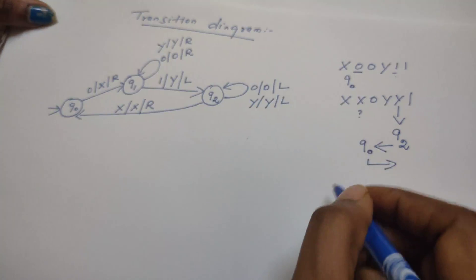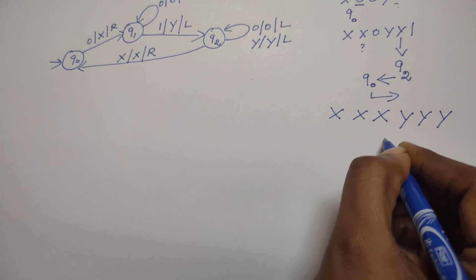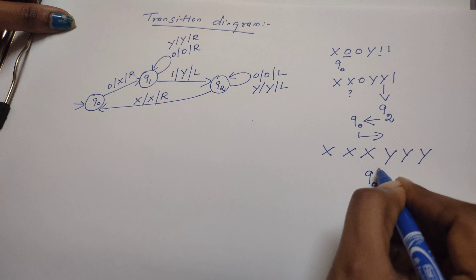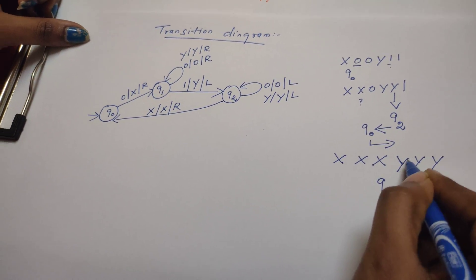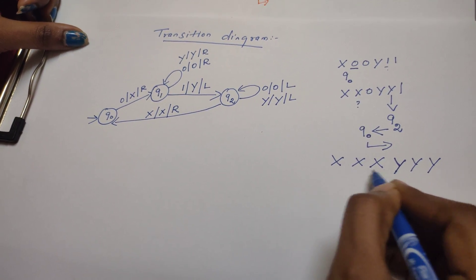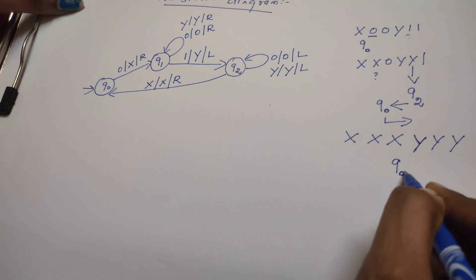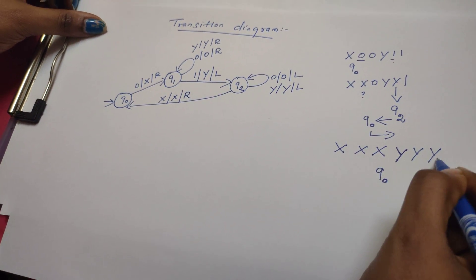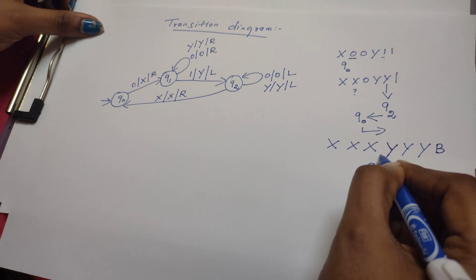At one point, all zeros are replaced by x and all ones are replaced by y. When the Turing machine is in state q0, it expects a zero, but only y is available — meaning there are no more zeros. Now the machine must confirm there are no extra ones remaining. After reading all the y's, it expects a blank symbol. If no ones remain, the count of zeros equals the count of ones.